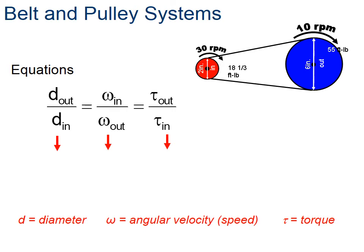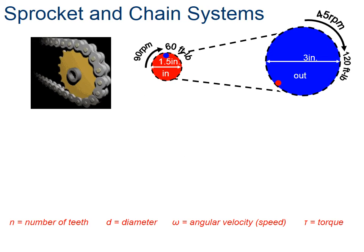We're given some things here. In the red pulley, it's rotating at 30 RPMs and it has a diameter of 2 inches. And you can see the corresponding numbers for the blue pulley. We also are given some torques as well. So if we plug in those numbers and take a look at them, they're the same.